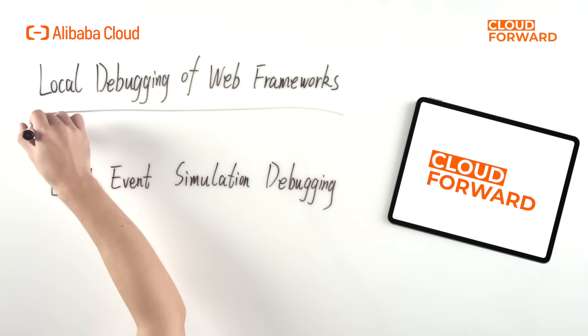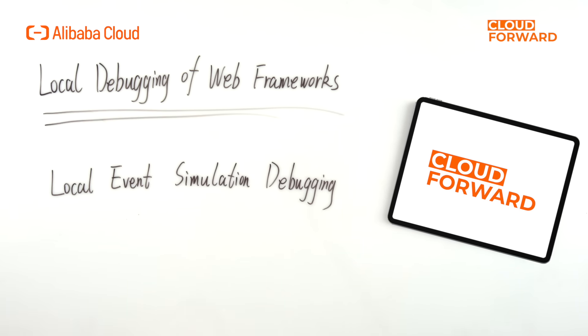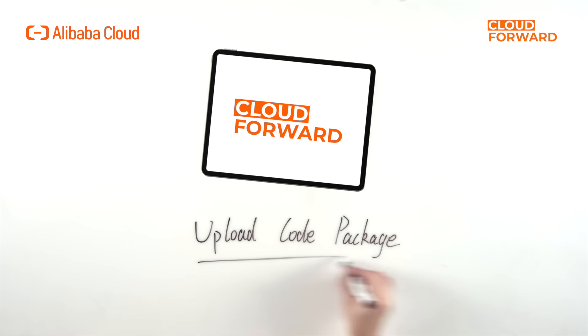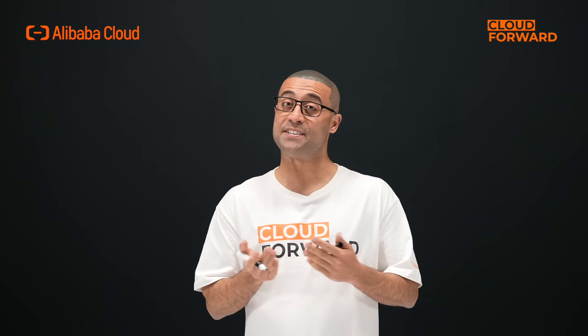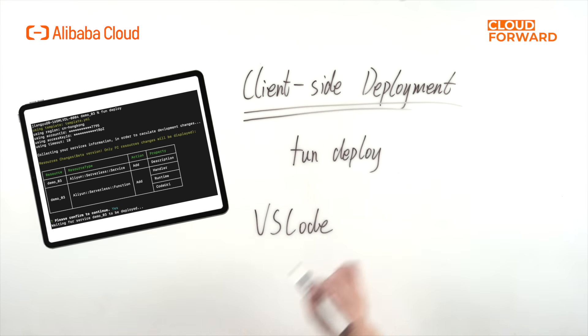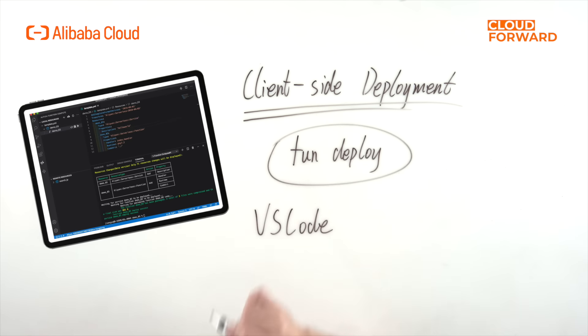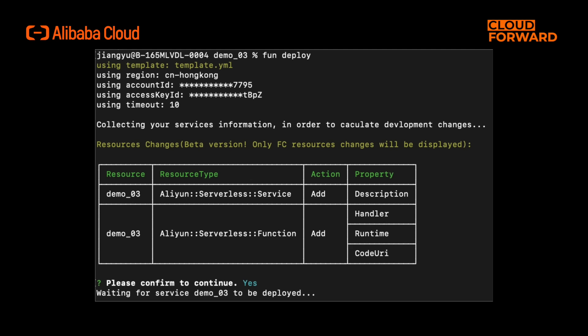Other debugging methods include local debugging of web frameworks and local event simulation debugging. Next, let's look at how to quickly deploy functions in Function Compute. The method of deploying functions is very simple and does not require special dependencies — even without Docker, it is possible. The first deployment method is to create a function online and upload the code package, or update the function by uploading the code package. The second deployment method is client-side deployment, which uses command line tools to execute FunDeploy, or uses the VS Code plugin to click the upload and deploy button for automatic deployment.